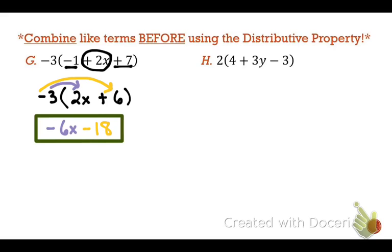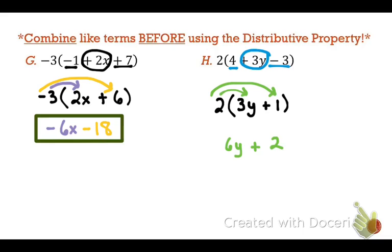Okay, let's go on to the next one. All right, so do you guys see any like terms inside of those parentheses? 4 and negative 3. If you guys would, I want you to underline that 4 and the negative 3. And then that 3y is all by himself. Let's drop the things down. Kaylin, when you drop it down, what does it look like now? 2 on parentheses. 3y plus 1 on the other side. Excellent. Notice that she put the variable term first. Okay, Kaylin, would you like to distribute it for us? 2 times 3y is 6y. 2 times 1 is 2. All right, 6y plus 2 is correct.